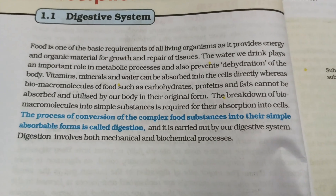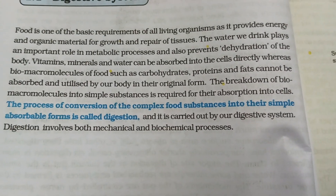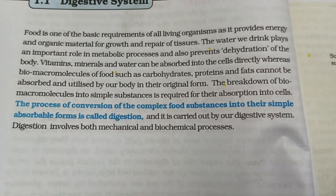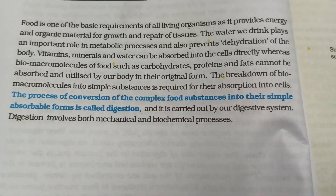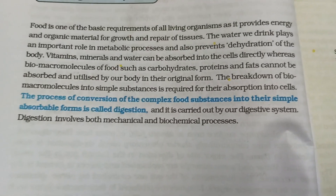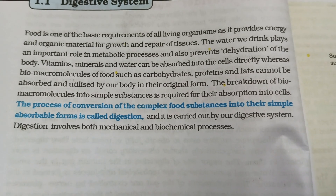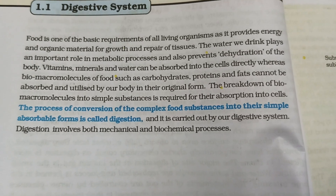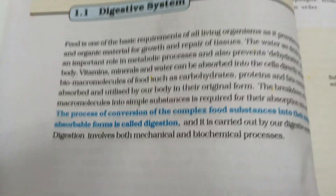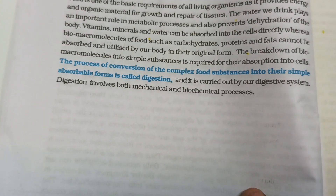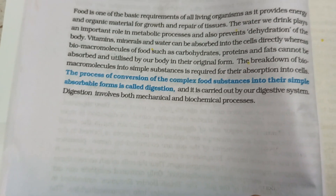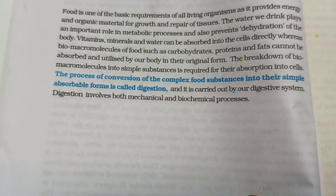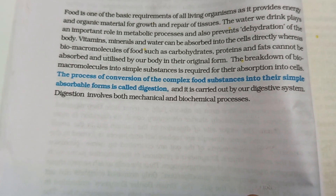These complex substances — carbohydrates, proteins, and fats — must be broken down. The process of conversion of complex food substances into their simple absorbable forms is called digestion, and it is carried out by the digestive system.